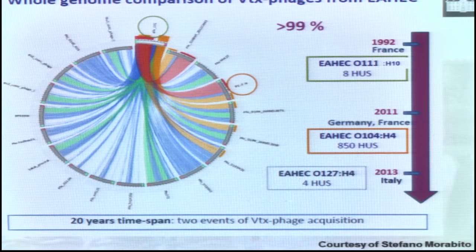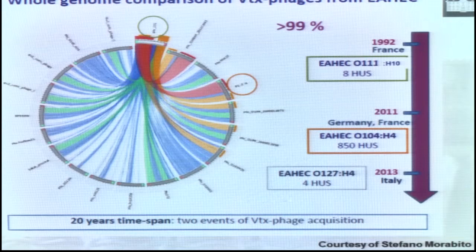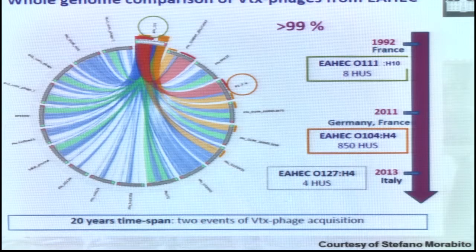These phages are quite resistant in the environment. A study by my Italian colleagues examined the phage that infected the O104H4 strain in the German outbreak, and compared its genome to a phage found in an outbreak in France 20 years earlier. They found the phage in serotype O111H10 is 99.9% identical to the phage found in the German outbreak, and very similar to a strain of a different serotype, O127H4, that caused four cases of HUS in 2013.